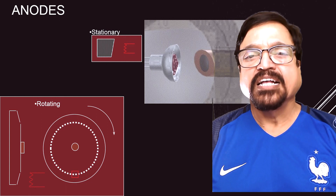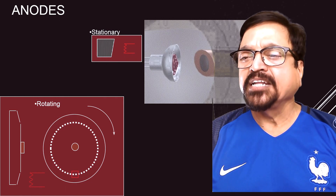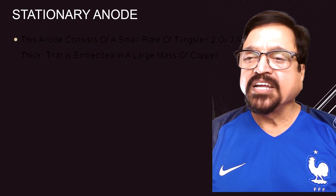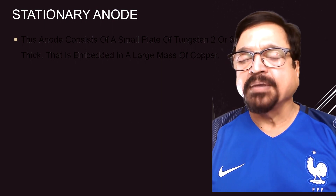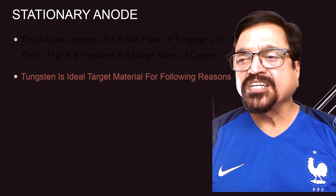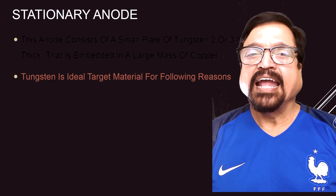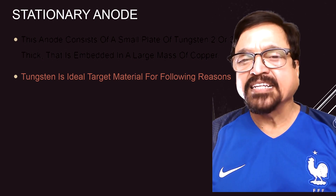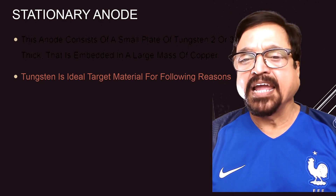Now we are going to see the stationary anode. This shows a stationary anode — it doesn't move. Outside it is copper and the focal spot is of tungsten. The material is the same as the rotating anode but the design is different. This anode consists of a small plate of tungsten, 2 to 3 millimeters thick, embedded in a large mass of copper. Copper is a very good conductor and tungsten has a very high melting point — that is why the combination is used. One material accommodates the huge heat production and the other dissipates it.